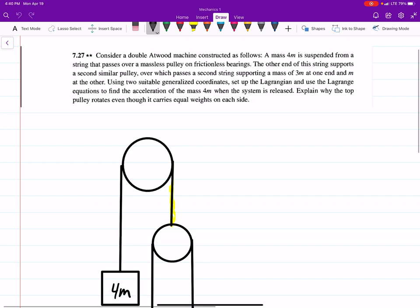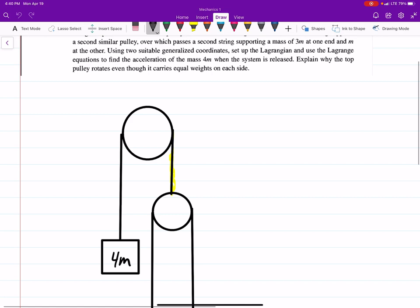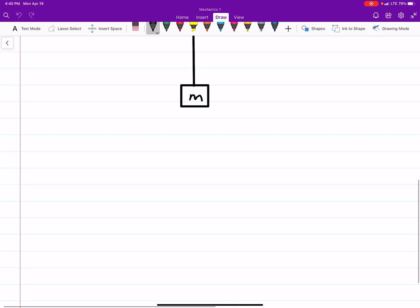So the question itself says, well that's just this up there, but it wants us to set up the Lagrangian and use the Lagrange equation to find the acceleration of mass 4m when it is released. So that's really what we're looking for here.